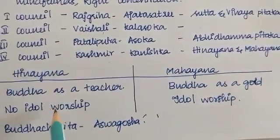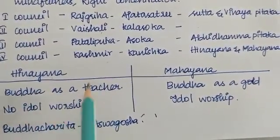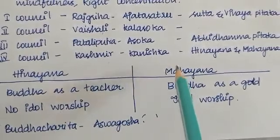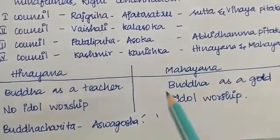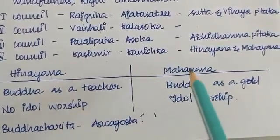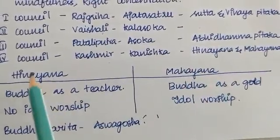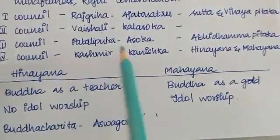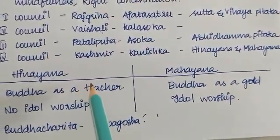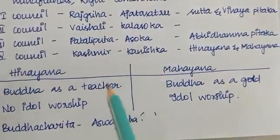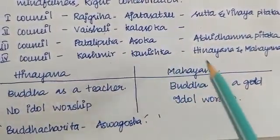In the Buddhist language, there is no idol worship. Any idea should be directed to a god. In Mahayana, Buddha is also considered a god. They worship Buddha as a god. He is also mentioned in Buddhist books. Most kings followed Mahayana Buddhism.